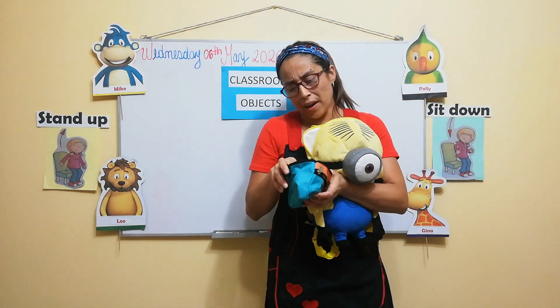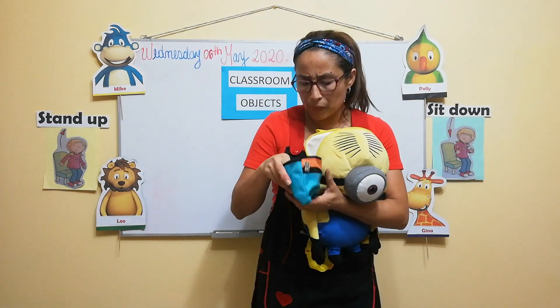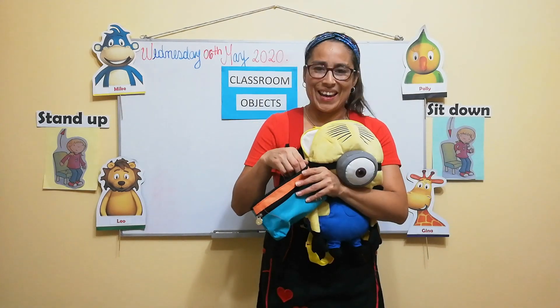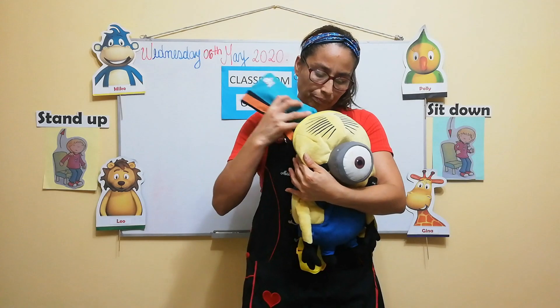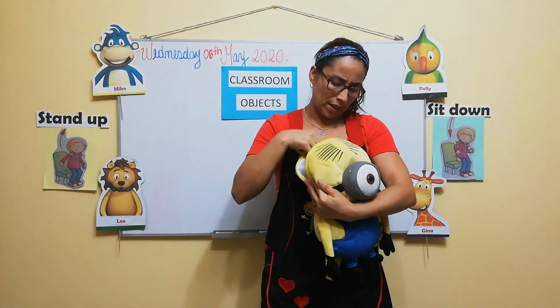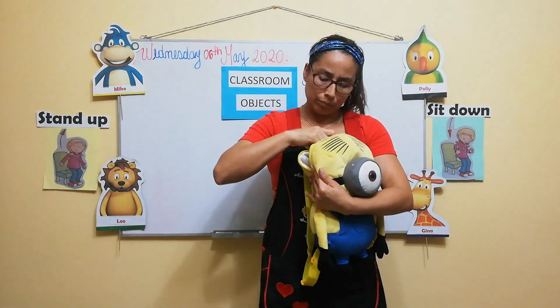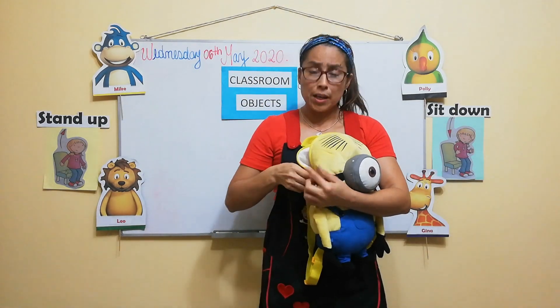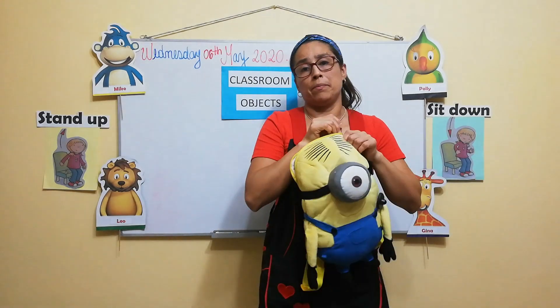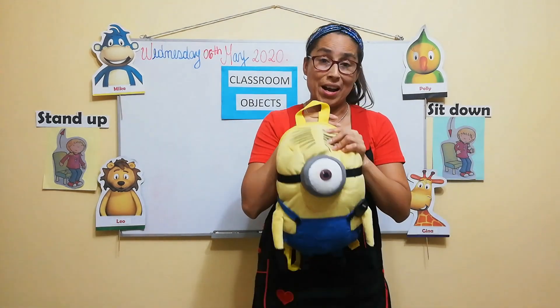Now, look. What else? That's all. Okay. So now, listen. It's a ruler. Yes. It's a ruler. All right. Okay. So, okay. And close my school bag. All right.